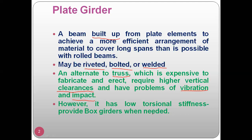That is why we go for plate girders where the structure is subjected to a lot of vibration and fatigue loads — fatigue loads being nothing but impact loads. However, plate girders have lower torsional stiffness, so we can use box girders where needed. Box girders are a structural element used for long spans carrying heavy loads where torsional stiffness is required.